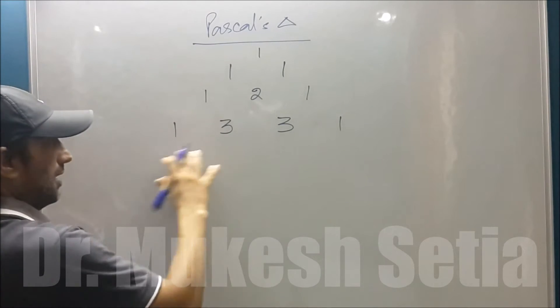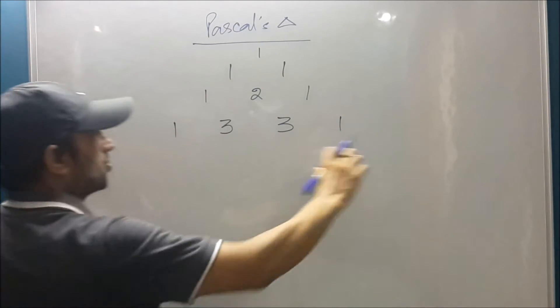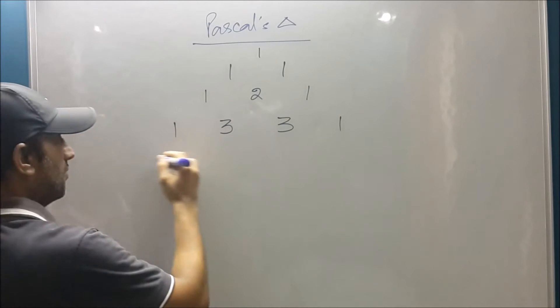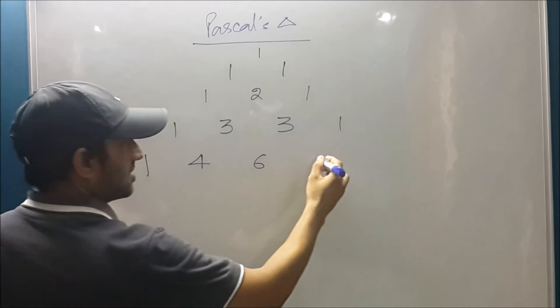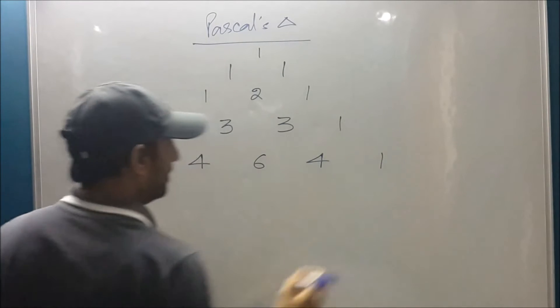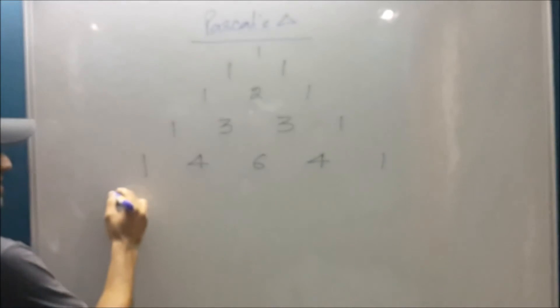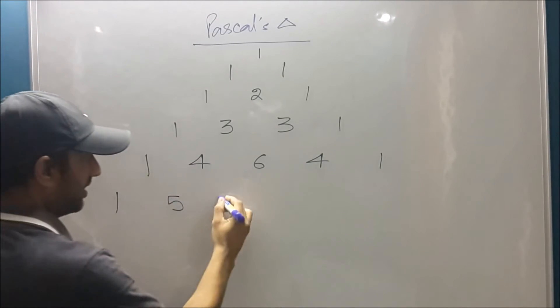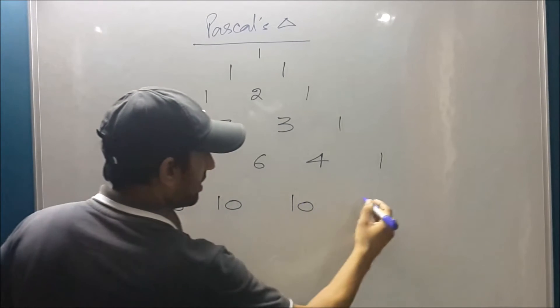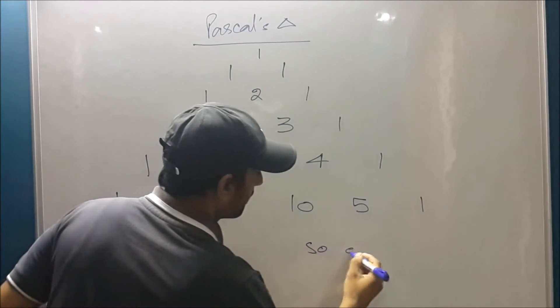Can you now make the next row? Yes, you write one, four, six, four, one. Next is one, five, ten, ten, five, one and so on.